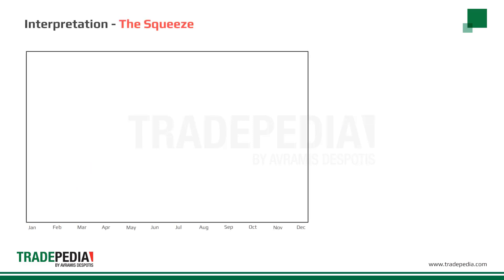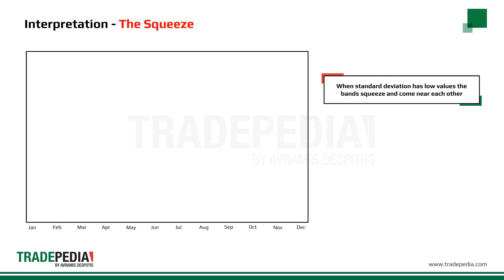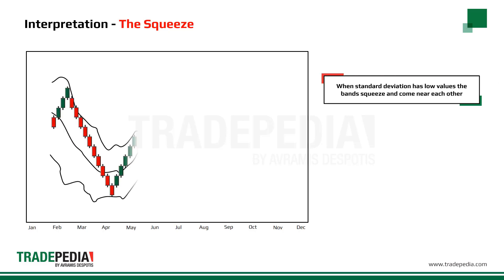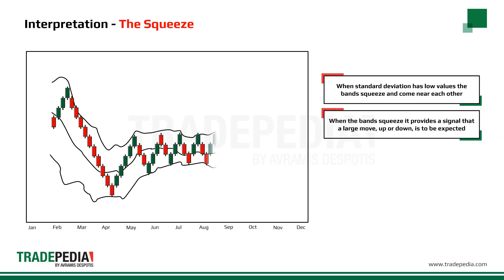The most popular way of using Bollinger Bands is the squeeze. When standard deviation has low values, the bands squeeze and come near each other, implying low volatility. Low volatility begets high volatility. So when the bands squeeze, it provides a signal that a large move, up or down, is to be expected.